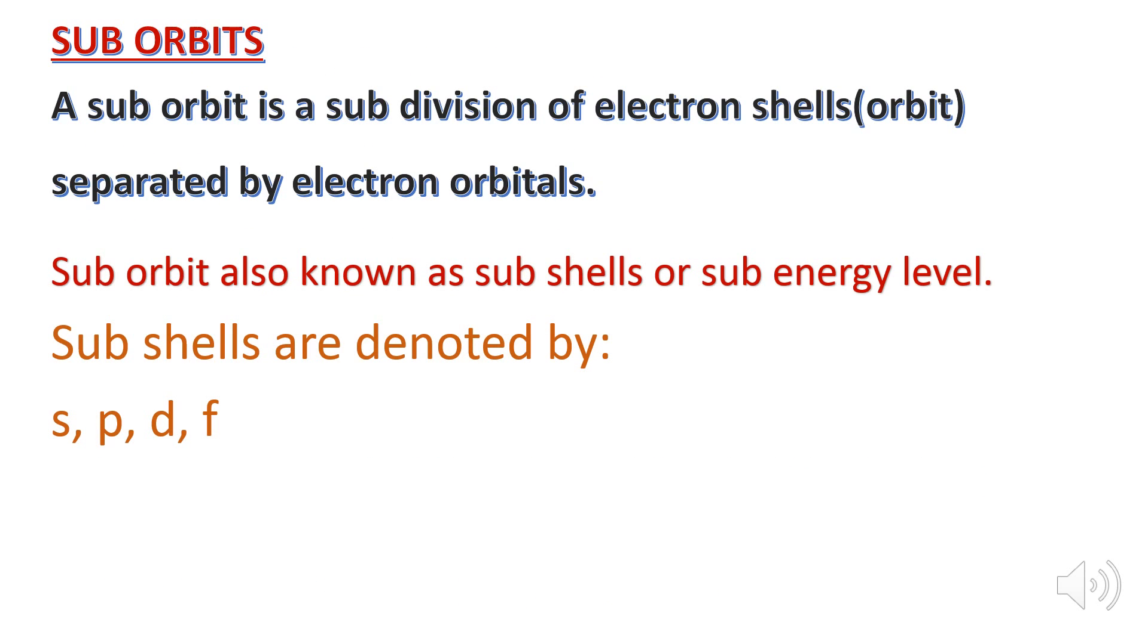Sub-orbits. A sub-orbit is a subdivision of electron shells or orbits separated by electron orbitals. Sub-orbit is also known as sub-shell or sub-energy level.